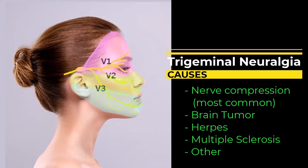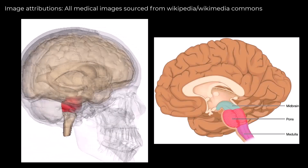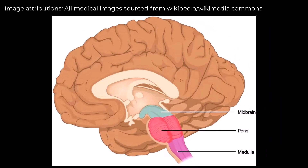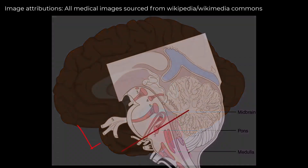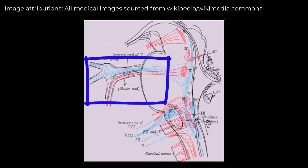Hyperactivity of the trigeminal nerve is the reason for trigeminal neuralgia. The trigeminal nerve actually arises from the pons, which is a part of the brain stem situated behind and below the main brain. The trigeminal nerve has two roots: the sensory root and the motor root. Its work is to supply sensations to the face and to supply certain muscles involved in chewing.